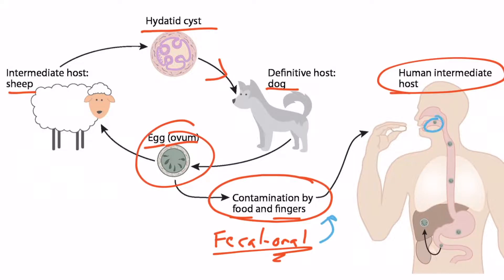These eggs go into the body and eventually enter organs such as the liver, where they form hydatid cysts. They can go to other organs, but the liver is the most common location. With this conceptual framework, let's dive into the details of Echinococcus granulosus.